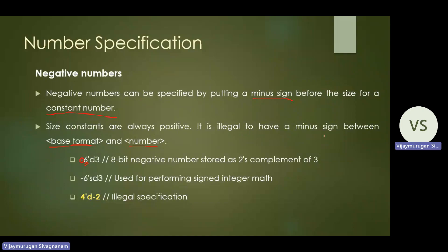For example, '4'd-2' is an illegal specification. The correct way is to write '-6'd3', where 'd' is decimal and 3 is the value — this represents a negative number. An 8-bit negative number is stored as the two's complement of 3, so minus three is stored as the two's complement of 3. You can also use 's' for signed integer: '-6'sd' represents a signed decimal value.